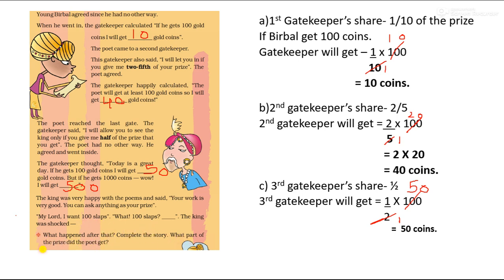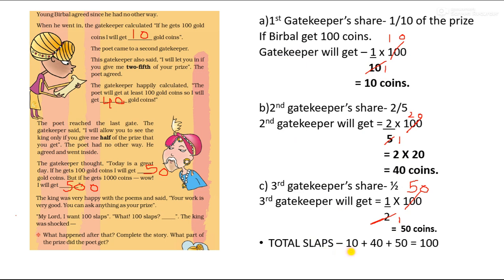Complete the story — what part of the prize did the poet get? Birbal was clever: he asked for 100 slaps. If he gets 100 coins, the first gatekeeper gets 10, so the first gatekeeper gets 10 slaps. The second gatekeeper gets 40 slaps, and the third gatekeeper gets 50 slaps. Total slaps: 10 + 40 + 50 = 100 slaps. So the poet will get no slaps. You have to do these questions in your book.